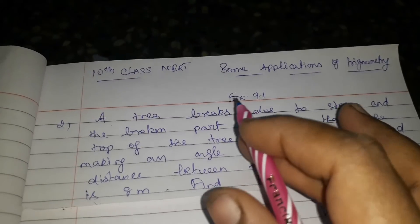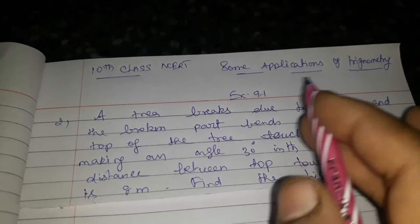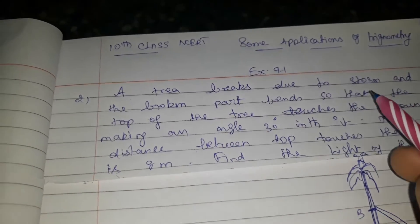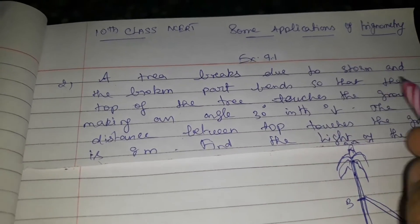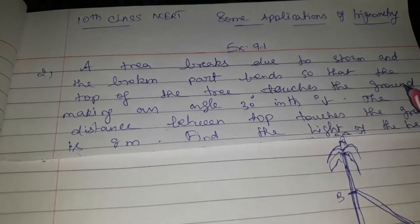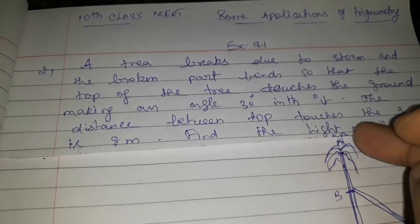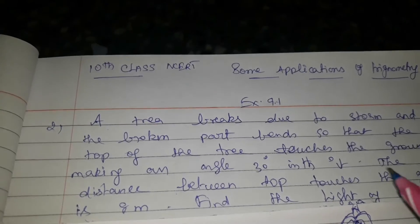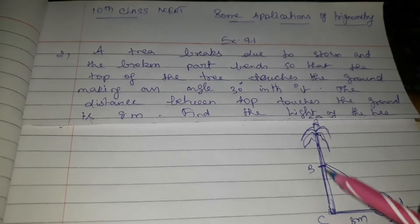This is Class 10 standard NCERT, some applications of trigonometry, Exercise 9.1. A tree breaks due to the storm and the broken part bends so that the top of the tree touches the ground making an angle of 30 degrees with it.